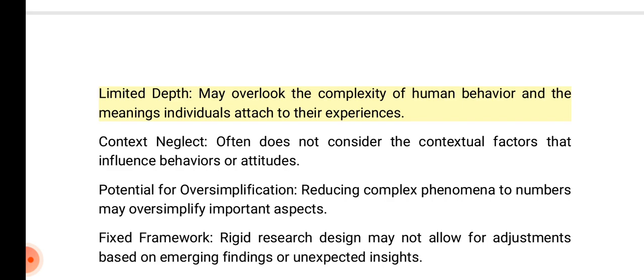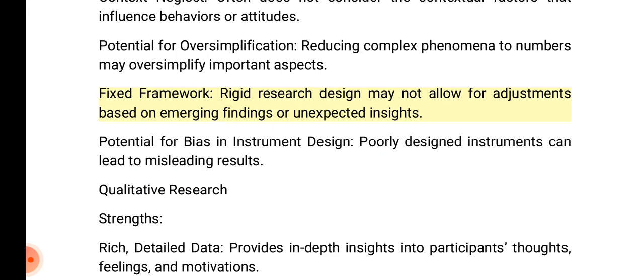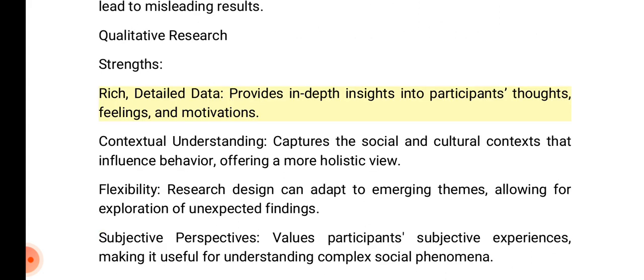Quantitative research weaknesses — limited depth: may overlook the complexity of human behavior and the meanings individuals attach to their experiences. Context: often does not consider the contextual factors that influence behaviors or attitudes. Potential for oversimplification: reducing complex phenomena to numbers may oversimplify important aspects. Fixed framework: rigid research design may not allow for adjustments based on emerging findings. Potential for bias in instrument design: poorly designed instruments can lead to misleading results.